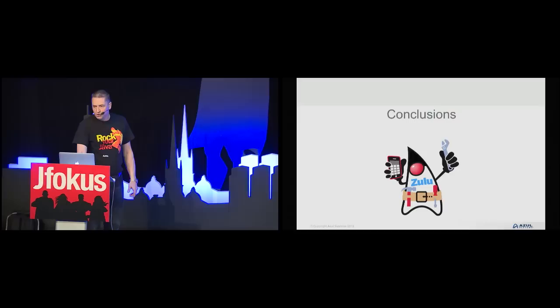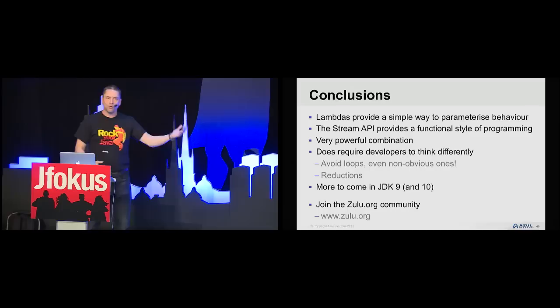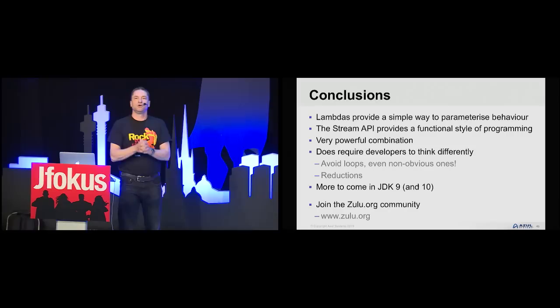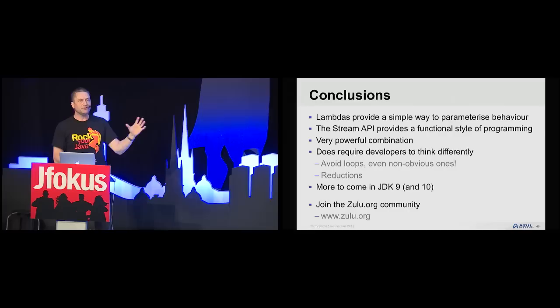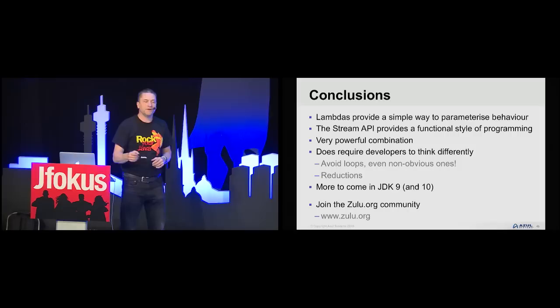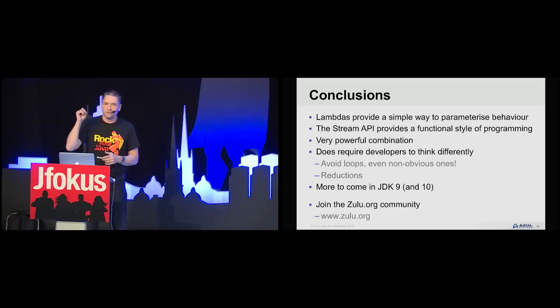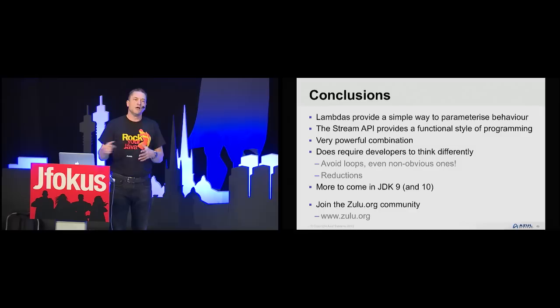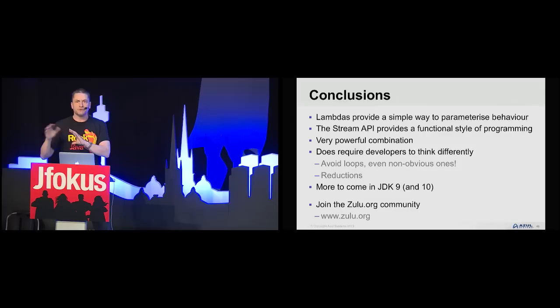In conclusion: Lambdas provide a simple way of parameterizing behavior. The Streams API provides a functional style of programming in Java, giving us a powerful combination. But we do have to think differently. If you're a traditionally imperative programmer and haven't done functional programming before — like me — think very carefully. If you think of using forEach in your stream, stop and think again. Unless you're doing something simple like printing values, forEach is often not the right approach. Think carefully about reductions: partial result and the next element. There's more to come in JDK 9, and some plans for JDK 10.